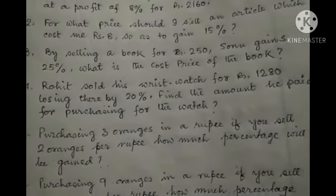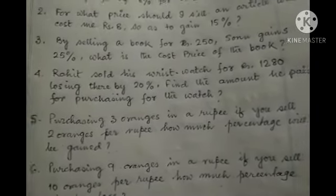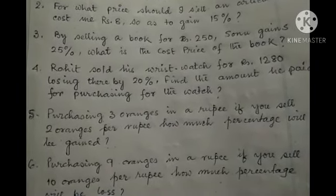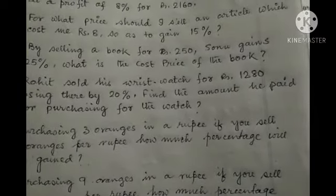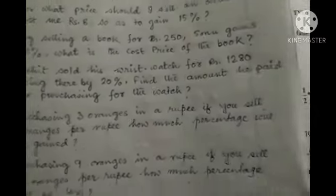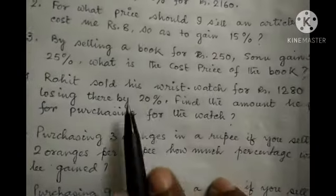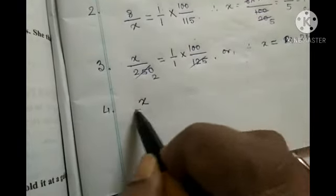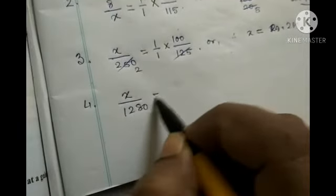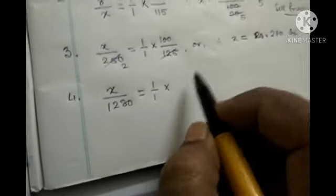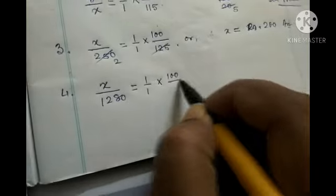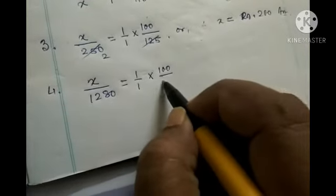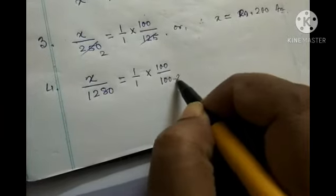Problem 4: A wristwatch is sold for rupees 1280, incurring a 20% loss. Find the amount paid for purchasing the watch. Since loss percent is given, we use Formula 2. The cost price is x, divided by sale price 1280, equal to 1 by 1 into 100 divided by loss percent. Loss is 20%, so 100 minus 20 equals 80.